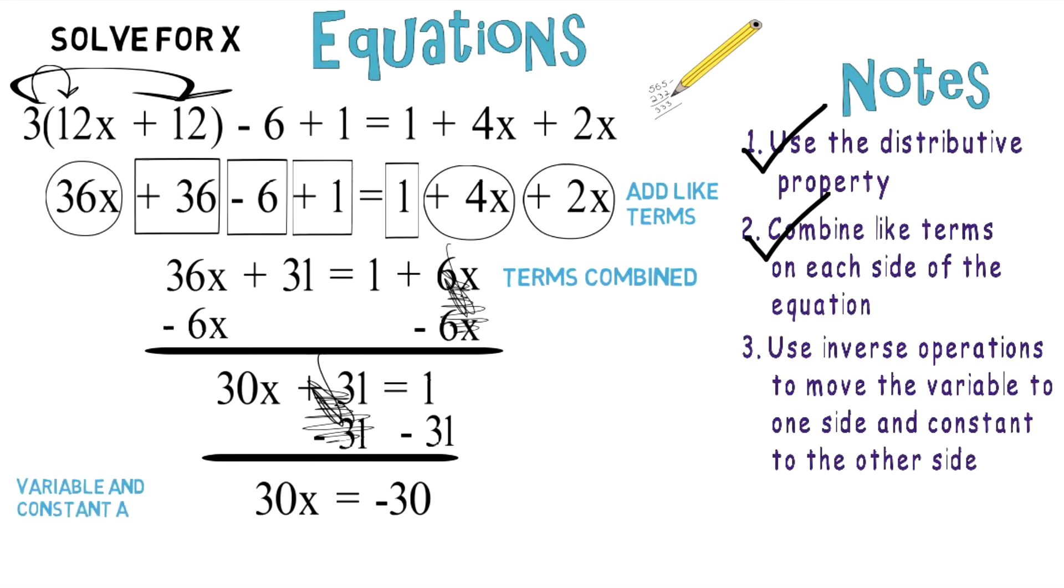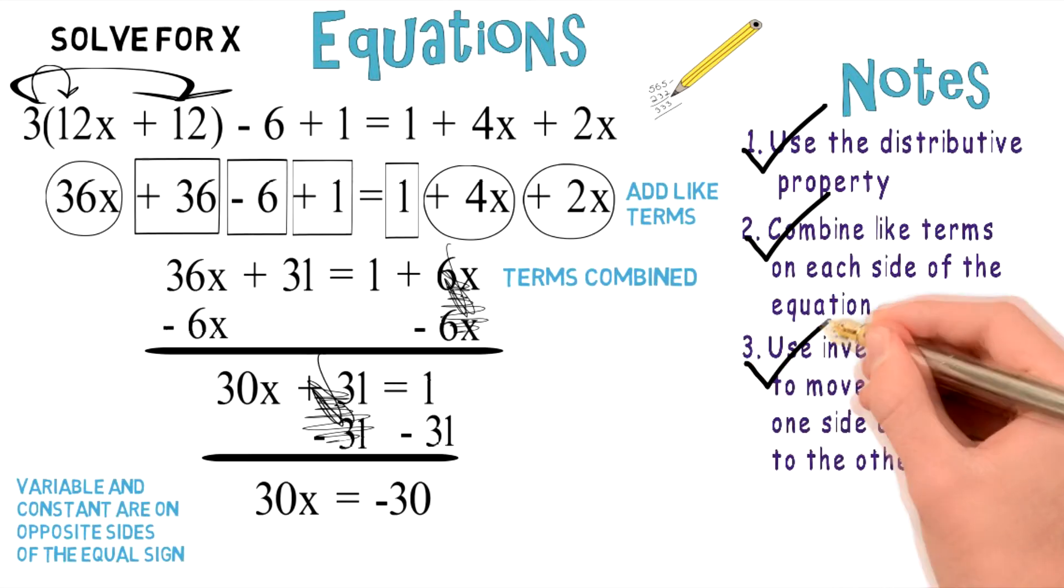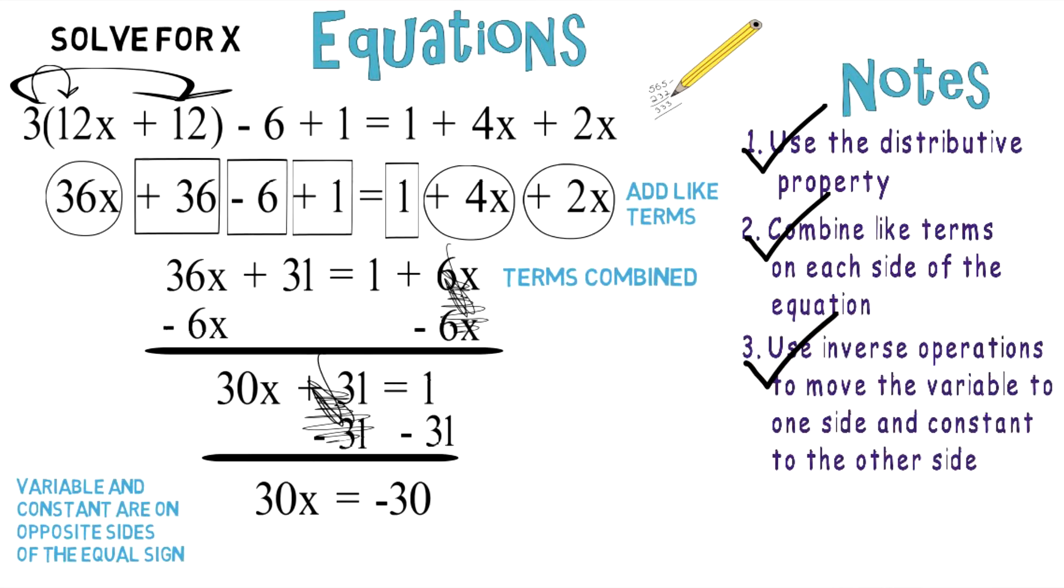Here, the variable and constants are on opposite sides of the equal sign. We can check off step 3, which brings us to step 4: use inverse operations to solve for x.